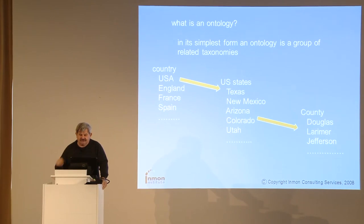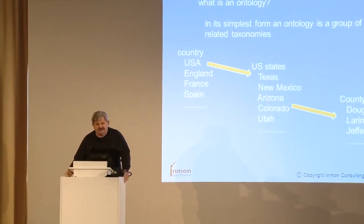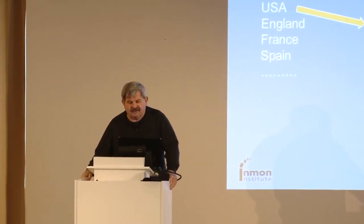You might recognize this from the world of computers — something called a bill of materials. It's very easy to get into an infinite loop, where one piece of data points over here, another piece of data points back over here, and if you're not careful with your programming you have a program that chases its tail. One of the difficulties of processing taxonomies and ontologies is being constantly aware that if you're not careful, you can fall into some insidious traps — and this is one of those traps.